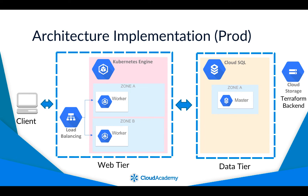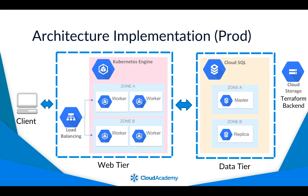The same configuration will be used to configure the development and production environments. By using workspace conditions in the configuration, the prod environment has a few differences from the dev environment. The production environment includes a failover replica of the database in a separate zone, providing high availability in the data tier. The production environment also increases the number of worker nodes in the Kubernetes cluster. The production configuration increases the number of pod replicas to have pods running on each worker, increasing the capacity to handle requests.